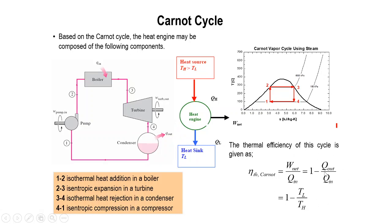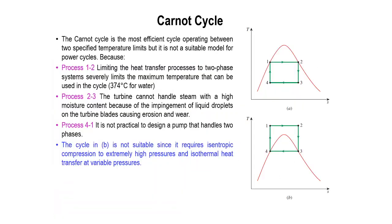The efficiency of the Carnot Cycle is work net divided by Q-in. Work net equals work turbine minus work pump, or Q-in minus Q-out. The Carnot Cycle is the most efficient cycle operating between two specified temperature limits. If you are confused, you can refer back to Chapter 4 which discusses the basic Carnot Cycle.